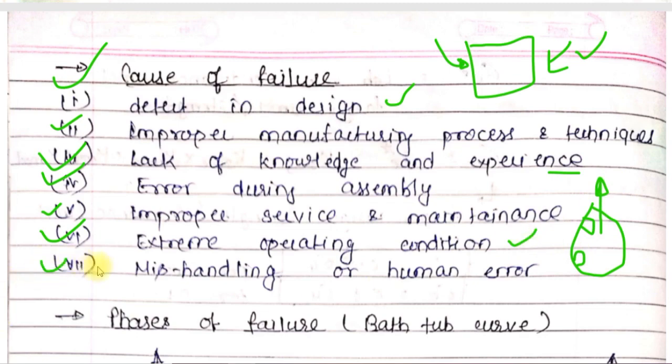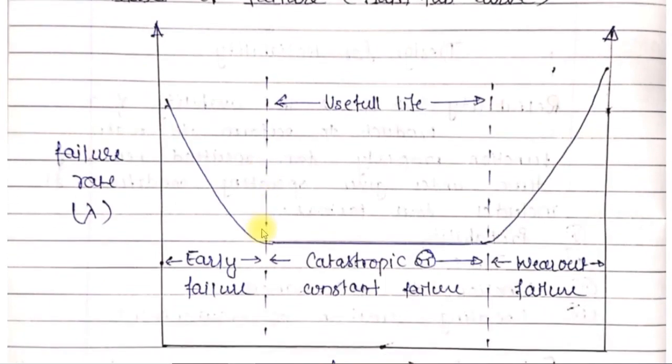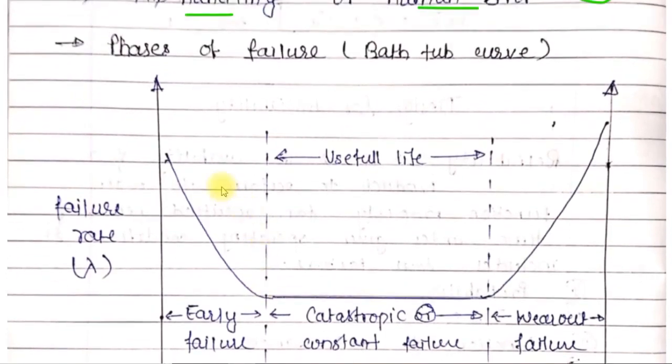Next is misleading or human error. During manufacturing, assembling, or at any stage, some misleading or human error may occur, which can also cause product failure. Now let's see how any product fails over its lifetime - in which phase is the chance of failure more, in which phase is it less, and what type of failure occurs.